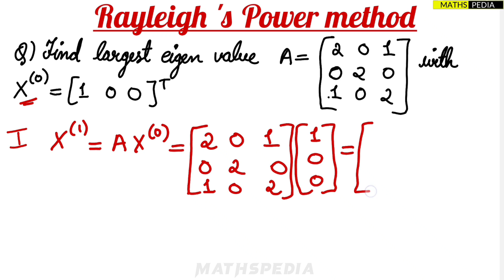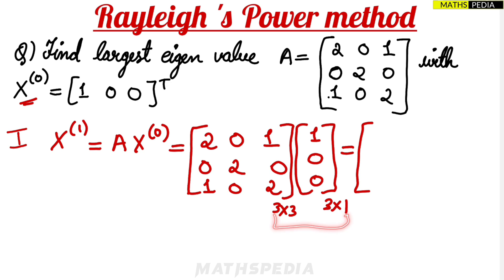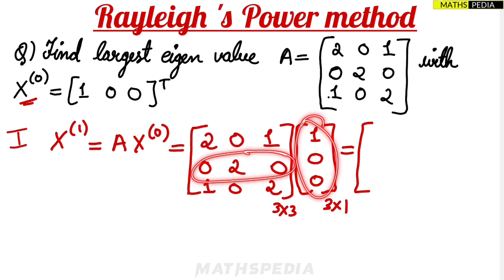To multiply the 3x3 matrix A by the 3x1 vector x^0, the inner dimensions must match — 3 and 3 match, so the result will be a 3x1 matrix. We take each row of A and multiply it with the single column of x^0, then sum the products.